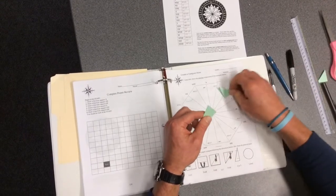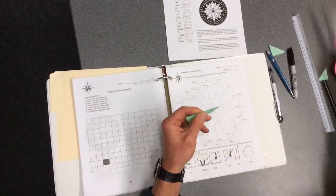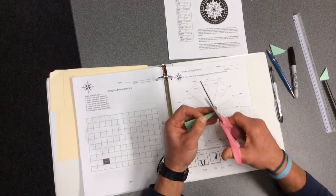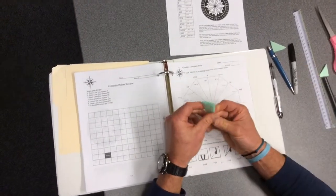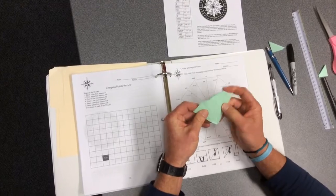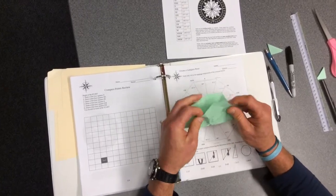Then flip your compass rose and make a very small snip at the end of your compass rose. Open your compass rose and it should look like this.